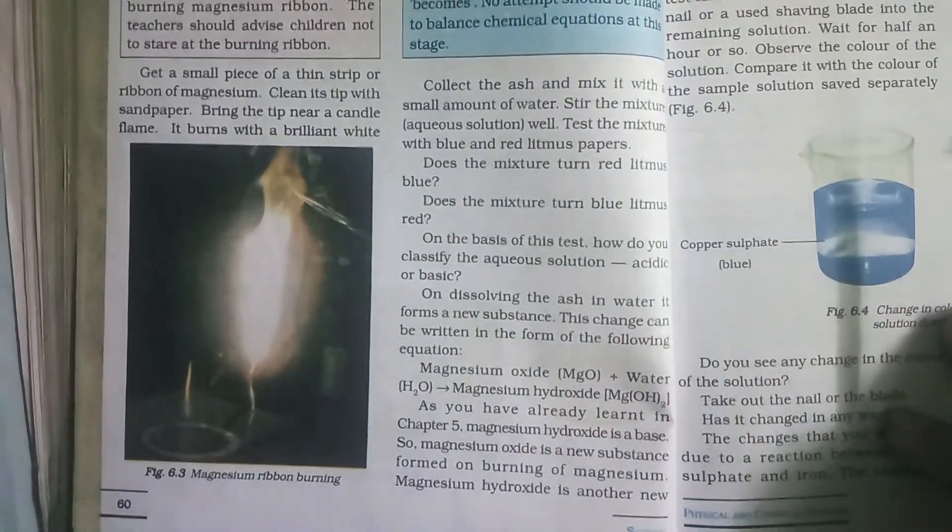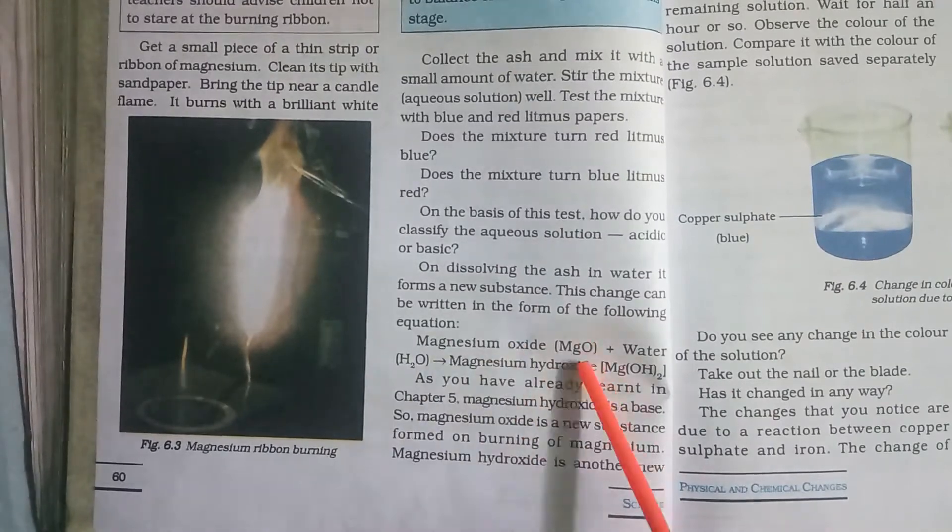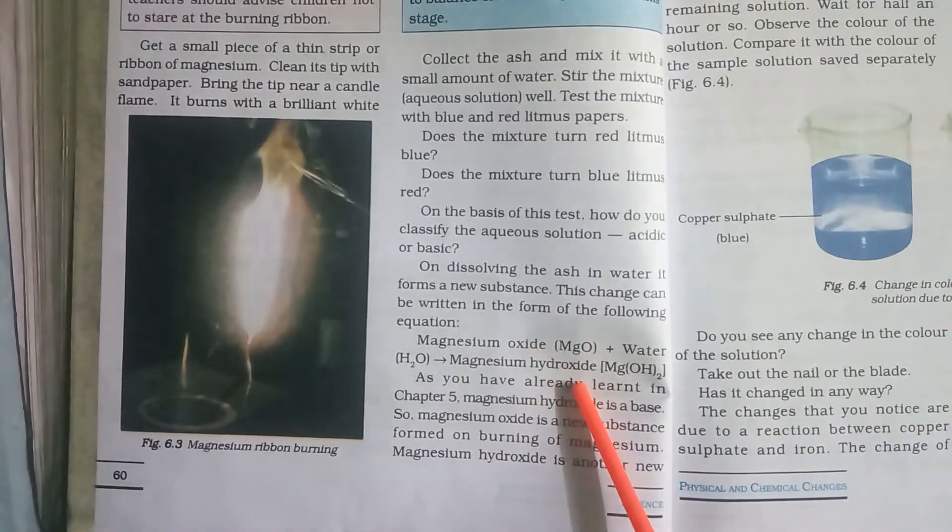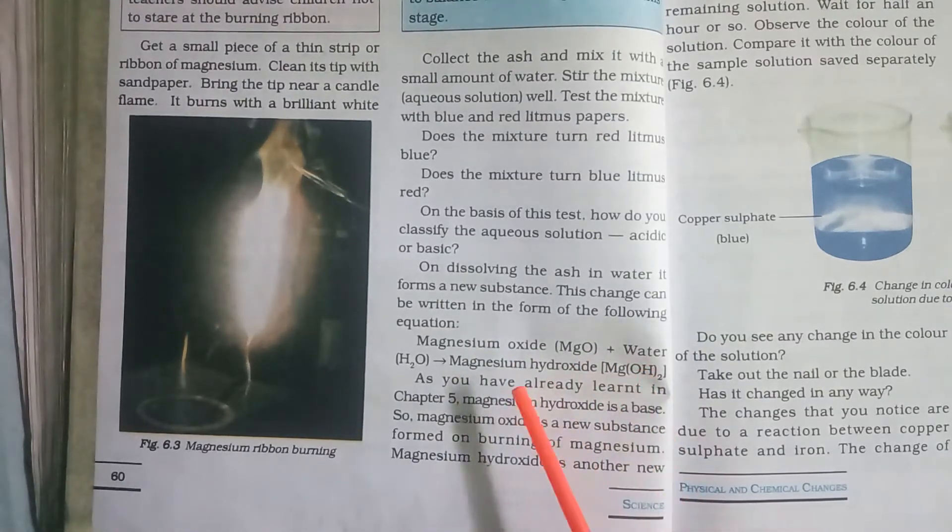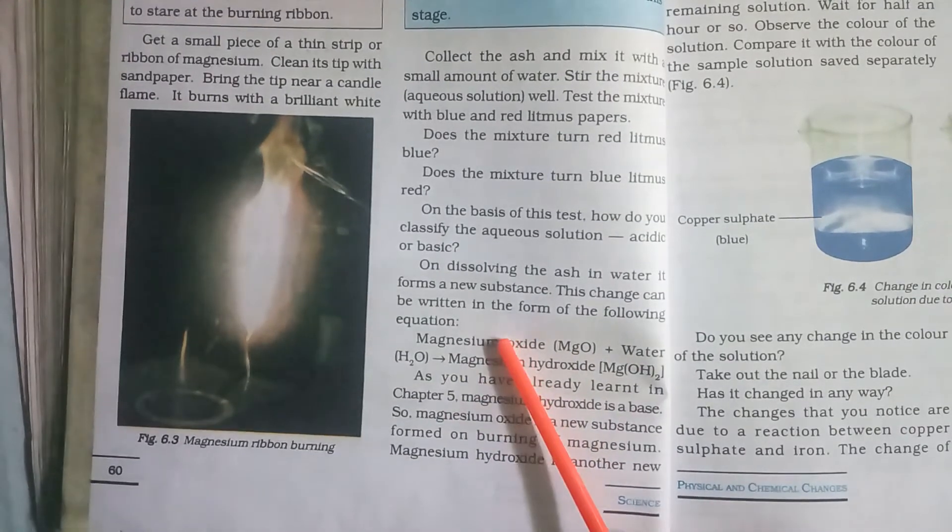Later we absorb this powder, the magnesium oxide we got. When it dissolves in water we get another new substance called magnesium hydroxide. That means magnesium oxide along with water gives rise to magnesium hydroxide. So we got two new substances.